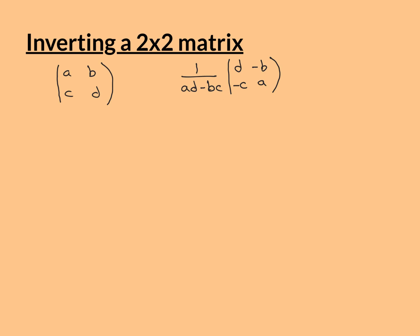We must assume that the matrix is actually invertible. As shown in previous videos in this playlist, a matrix will have determinant 0 — i.e., it will be a singular matrix — if and only if the rows are linearly dependent and the columns are linearly dependent. So we're assuming the matrix is non-singular, meaning its determinant is non-zero, which means the rows and columns are linearly independent.